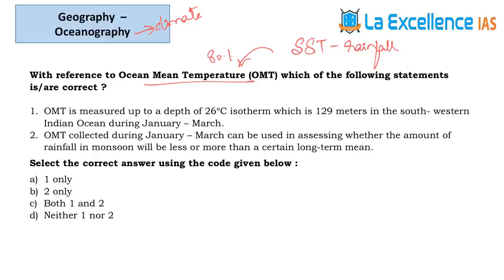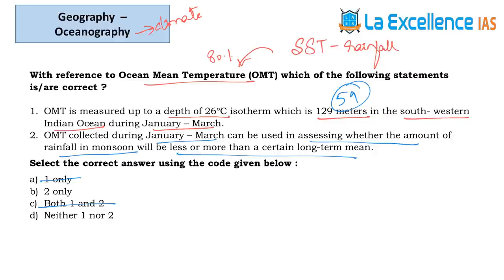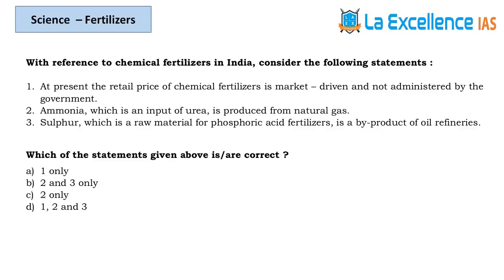Statement 1 — OMT is measured up to the depth of 26-degree isotherm, which is 129 meters in the southwestern Indian Ocean during January and March. During January and March this depth will be very less, around 59 meters, so statement 1 is wrong. Statement 2 — OMT collected during January and March can be used to assess whether rainfall in monsoon will be less or more than a long-term mean. Yes, answer 2 is correct.